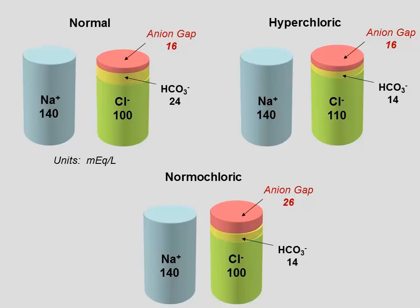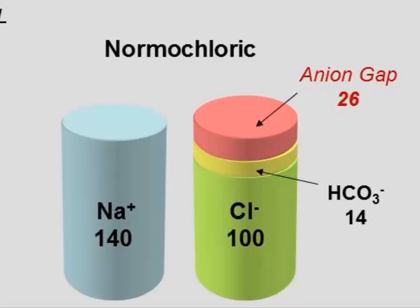The other possibility is that the chloride concentration doesn't change. It stays normal. There's a reduction in the bicarbonate concentration, and therefore the anion gap grows. It gets larger. So if we assume the same sort of concentrations here, let's say chloride is 100, bicarbonate is reduced down to 14, and now we have a larger anion gap, 26 milliequivalents per liter. This condition would be classified as normochloric.